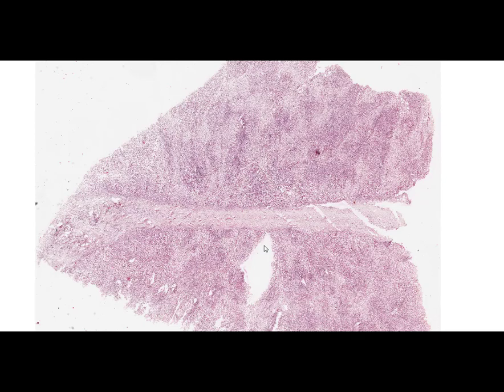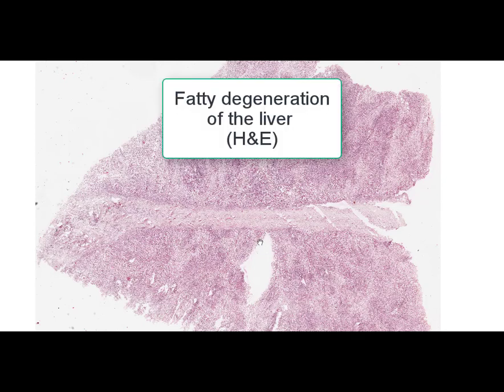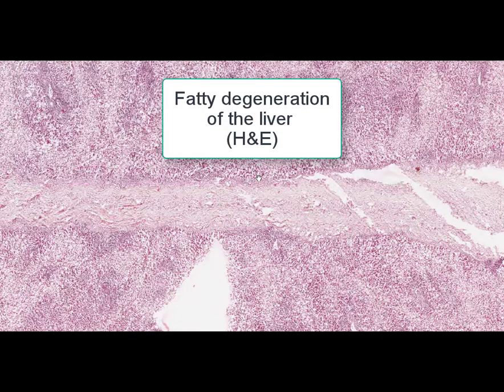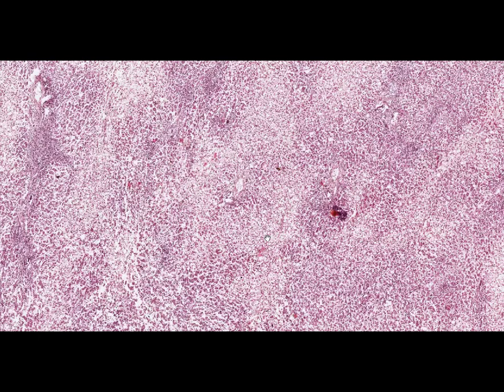On this slide we can see a portion of the liver. The stain is hematoxylin and eosin. The name of the slide is fatty degeneration of the liver. Even at low magnification, we can see that the general microscopical structure of the liver is not typical.